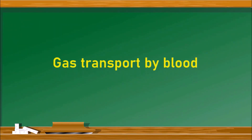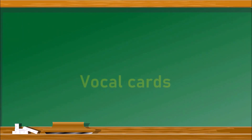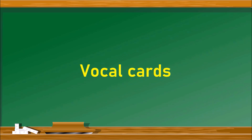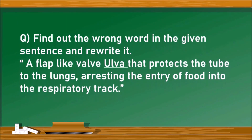Fill in the blank: when the air passes out of the lungs and over dash, it causes them to vibrate. The answer is 'vocal cords.' When gas passes out of the lungs over the vocal cords, the vocal cords vibrate and produce sounds.